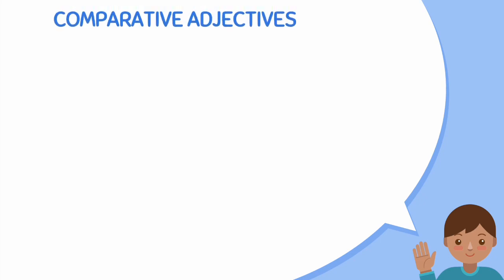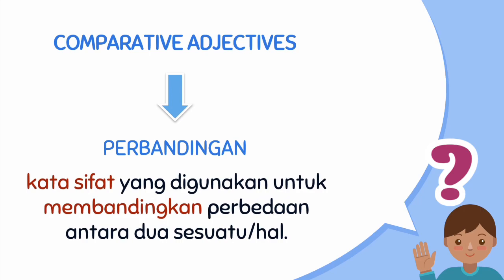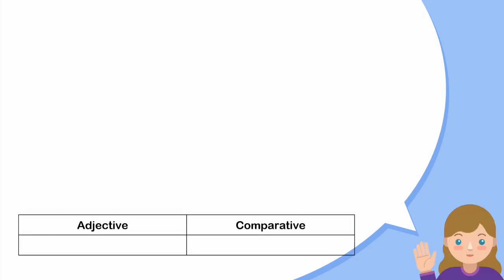Comparative adjectives adalah perbandingan. Maksudnya adalah kata sifat yang digunakan untuk membandingkan perbedaan antara dua sesuatu atau hal. Jadi comparative adjectives adalah kata sifat untuk membandingkan sesuatu. Adjective adalah kata sifat, comparative adalah perbandingan.